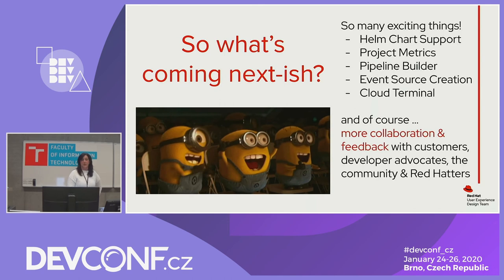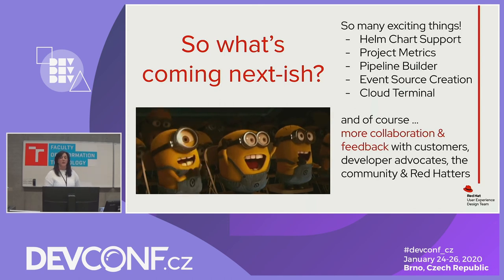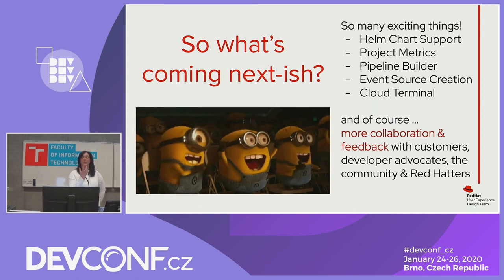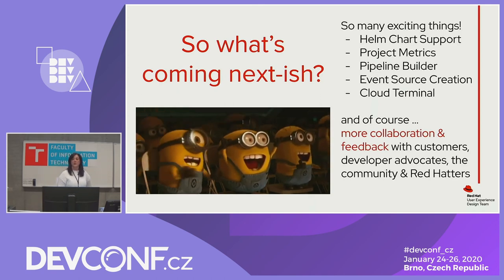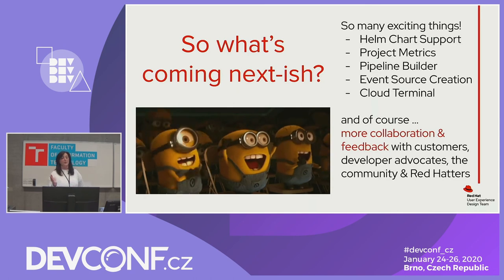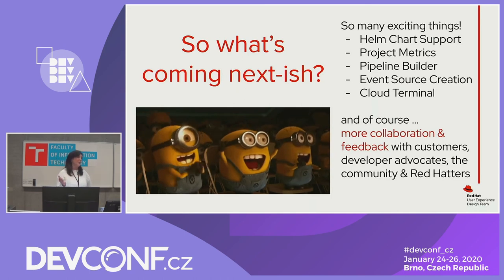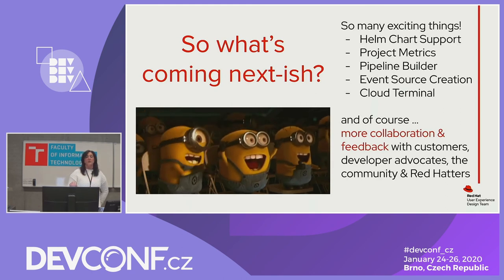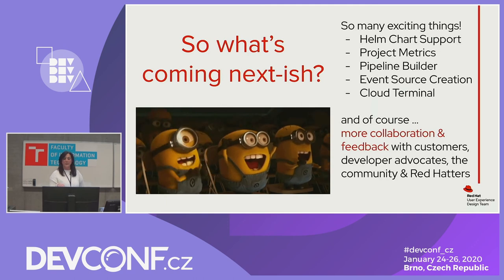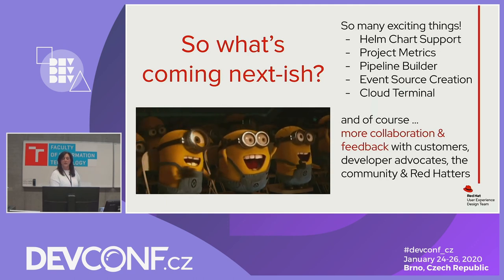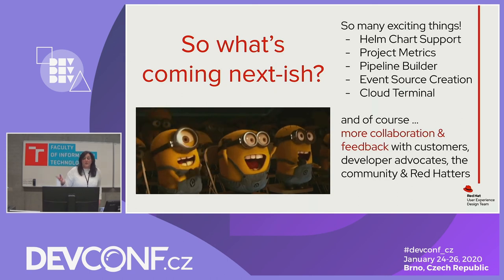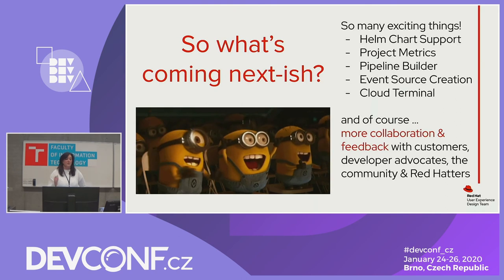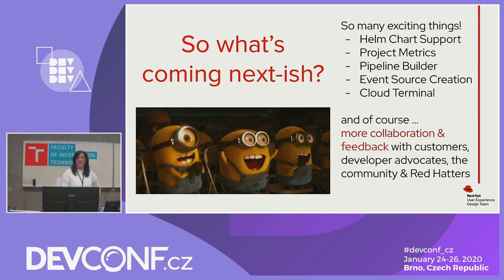What's coming next: we have a lot of exciting things — Helm chart support, project metrics, a pipeline builder through the UI, event source creation with Knative, and a cloud terminal. This is all coming post-4.3, targeting 4.4 or 4.5. We have designs and some implementation already started. For OpenShift developers it's going to be great, with more functionality continually added and more collaboration and feedback with customers, developer advocates, community, and Red Hatters.